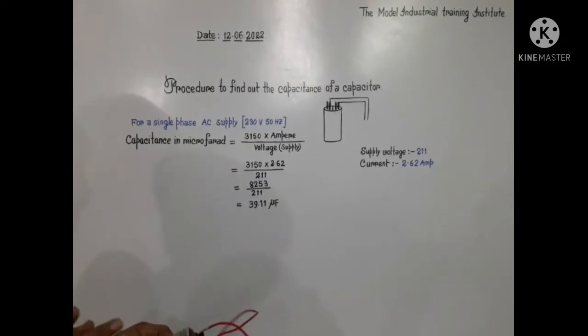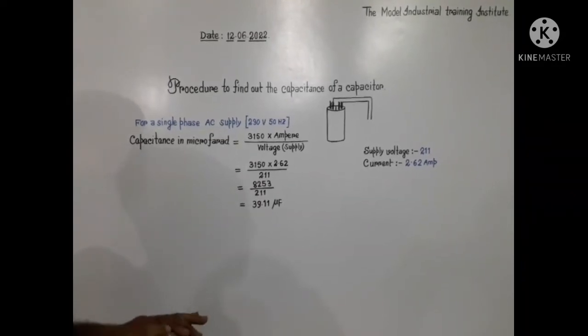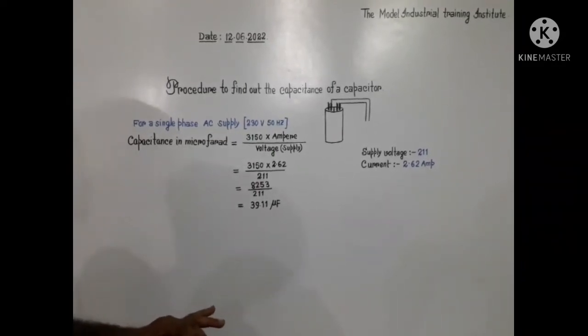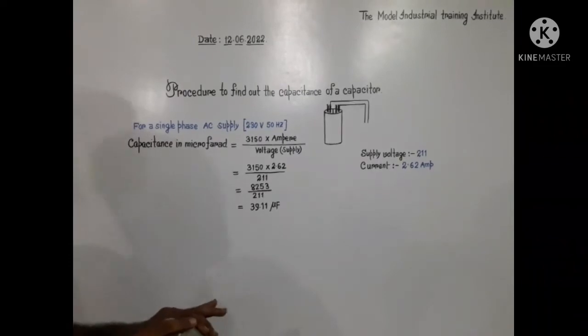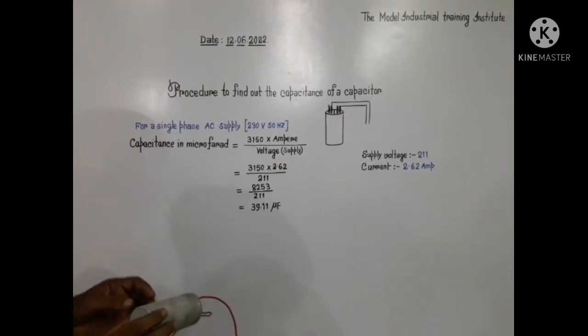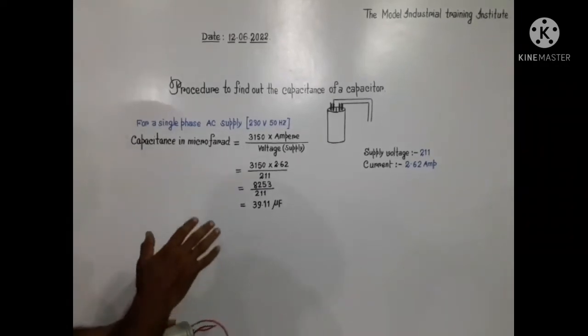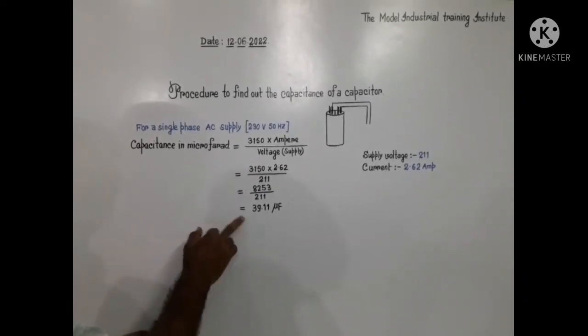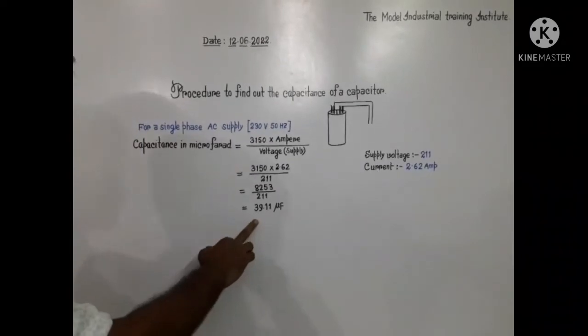So when you have a capacitance meter at that time easily you can measure. But while we have no capacitance meter, at that time by a simple calculation we can measure the capacitance.